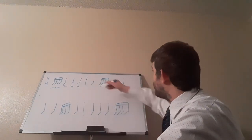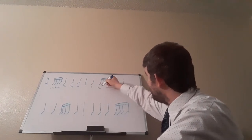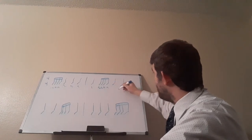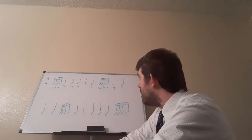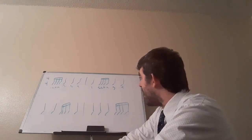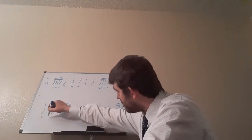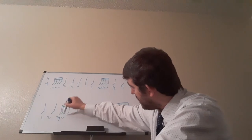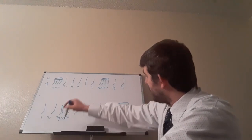Next, we have quarter note on beat one. Sixteenth notes are on beat two, so that's two, E, and A. And then the quarter notes on beat three and four. Then we have quarter note on beat one, quarter note on beat two, and then sixteenth notes on three, E, and A. And then we have quarter note on beat four.